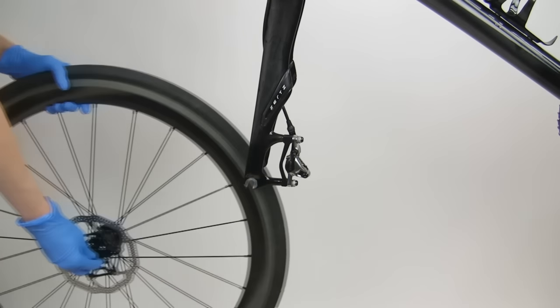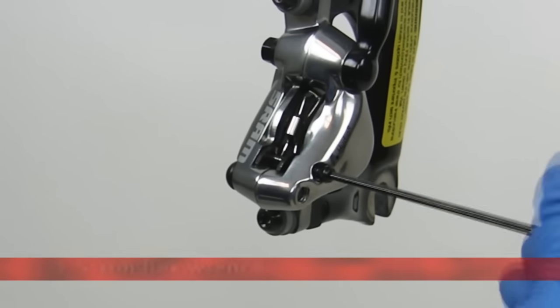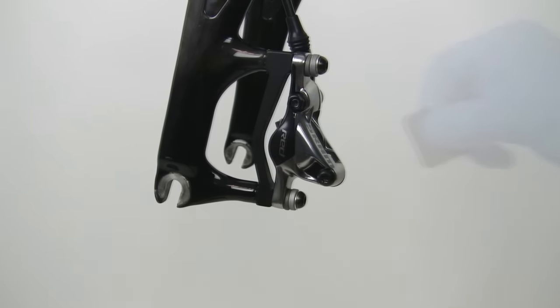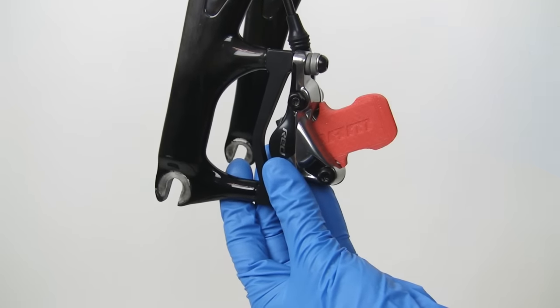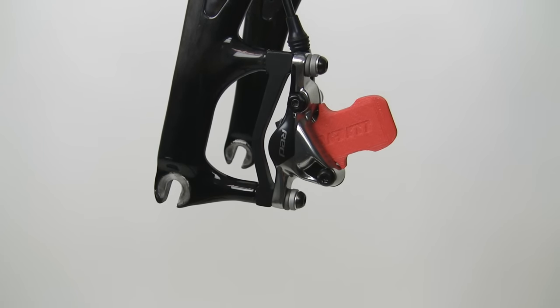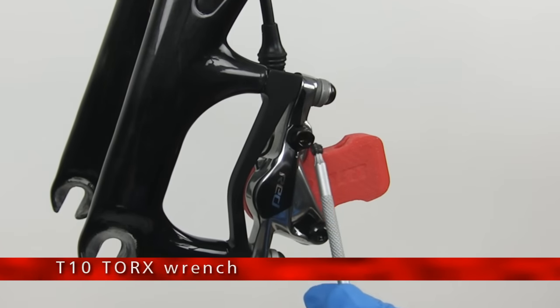Remove the wheel from the bike. Remove the brake pads from the caliper and insert the appropriate bleed block. This will help prevent system overfill and keep DOT fluid from contaminating your brake pads. Remove the caliper bleed port screw from the banjo bolt.